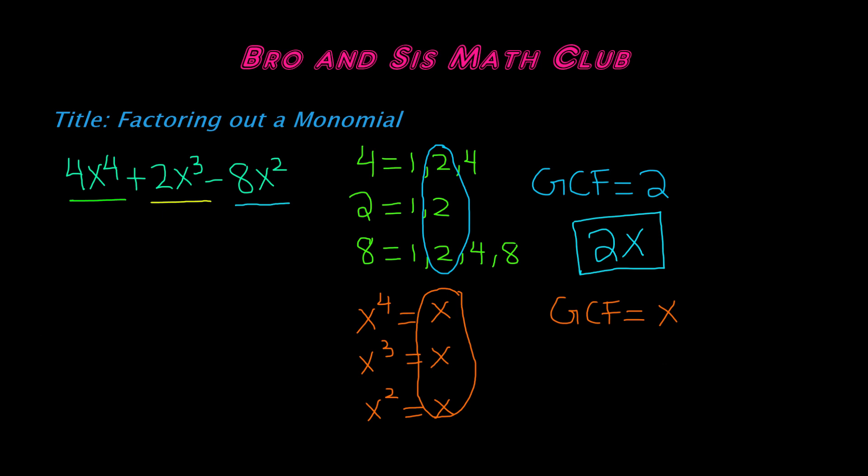So now that we know the GCF, let's go ahead and write it down. So we have 2x. Now what we're going to do is we're going to divide each of our monomials by 2x. So first we're going to divide 4x to the 4th by 2x. So we know that 4 divided by 2 gives us 2.